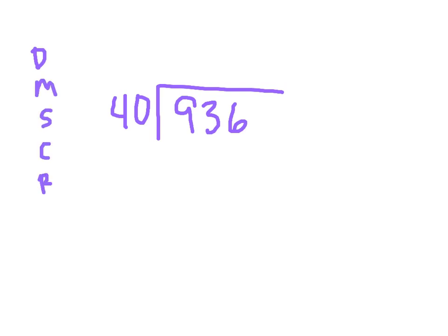I want to make sure that, you know, there's many different ways that you can solve these. Let's try this. Let's go 936 divided by 40. Are we going to have a remainder? You betcha. But we can look at this. We can still do DMSCB. Divide, multiply, subtract, compare, bring down.